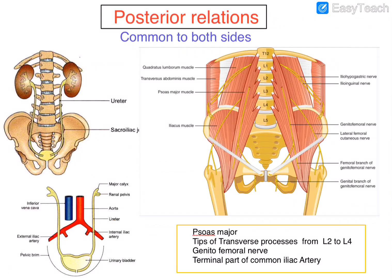The posterior relations are common to both sides. The structures related to the ureters on the posterior aspect are: first, the psoas major muscle on both the right and left sides; the genitofemoral nerve, which pierces the psoas major muscle, is also related on the posterior aspect; the tips of the transverse processes from L2 to L4 are also related posteriorly; and the terminal part of the common iliac artery is also related posteriorly on both sides of the ureters.